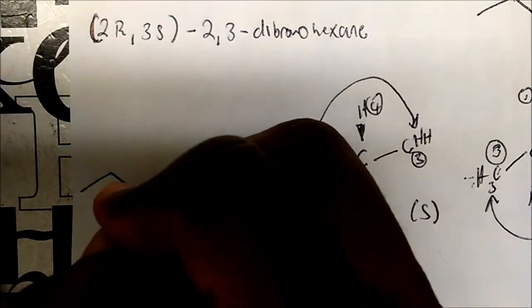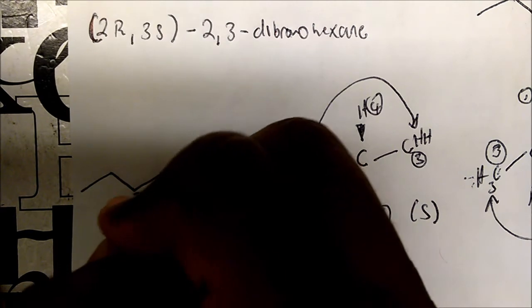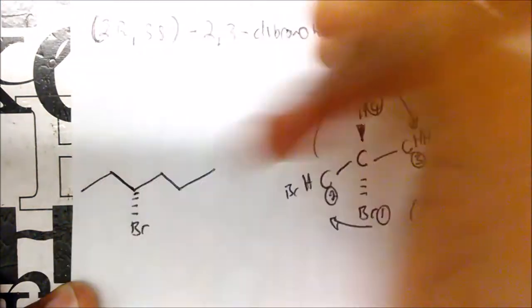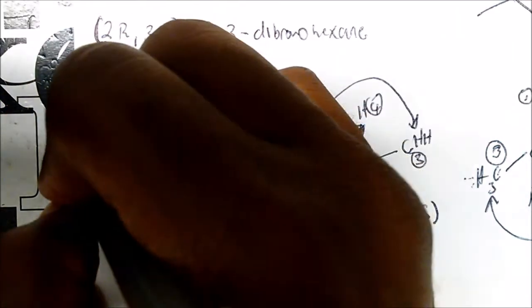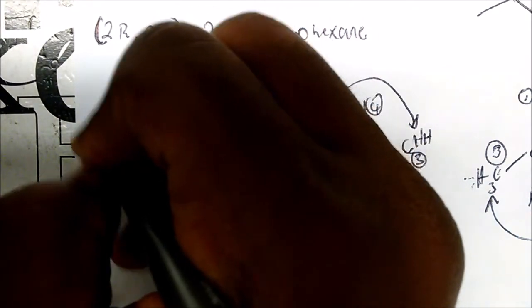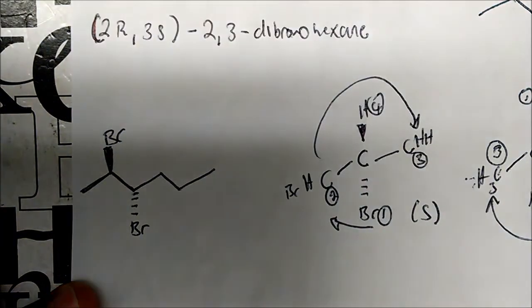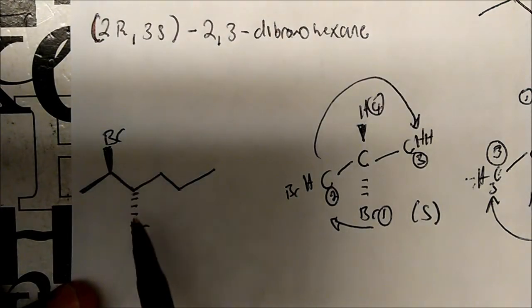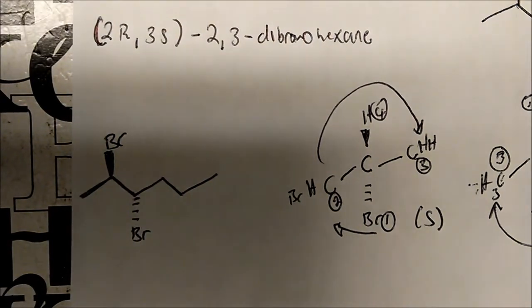So on carbon three, if we wanted to make it S, we said the bromine has to be going away from us — that means the hydrogen has to be coming out, but we don't really show hydrogen, so that's fine. Therefore, the bromine on carbon two, to make it R, has to be coming out toward us. And that will be the structure of 2R,3S-2,3-dibromohexane.